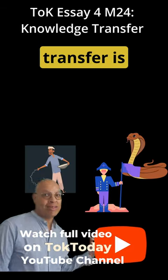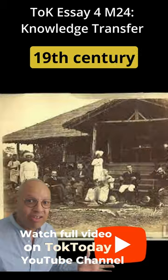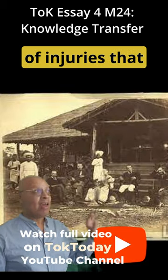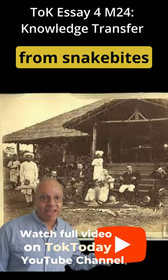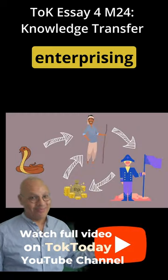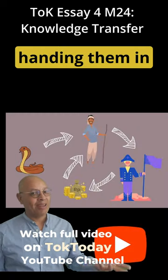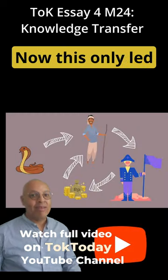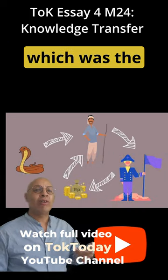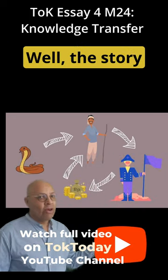Well, this knowledge transfer is apparently what a British governor did in the 19th century, when he decided that a way to reduce the number of injuries to Indian farmers from snake bites was to pay the farmers for dead cobras. We're told that this led to enterprising people breeding cobras and handing them in for extra payment, which only led to an increase in the overall number of snakes — the exact opposite of what the colonial governor had originally hoped for.